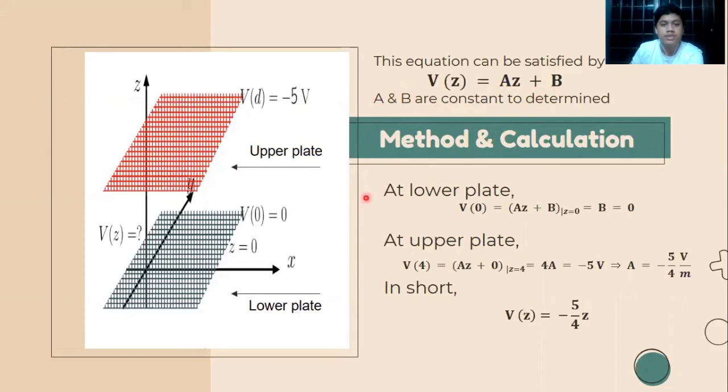We can determine the A and B values by using the lower plate equation. Since the value of z = 0, we just put zero here, and we get the value of B = 0.